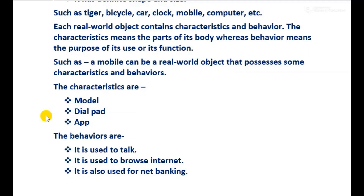The characteristics of a mobile phone object are the model number, the style of the dial pad, or the applications installed in that mobile phone. These are all the attributes or properties of the mobile phone. The behaviors of the mobile phone are: it is used to talk, it is used to browse the internet, and it is used for net banking.